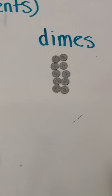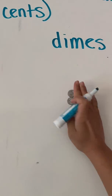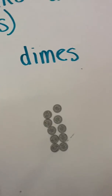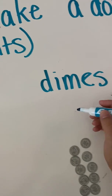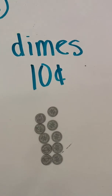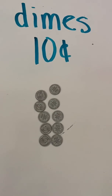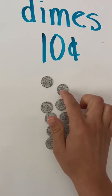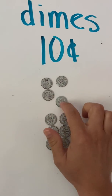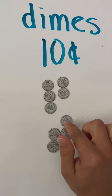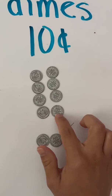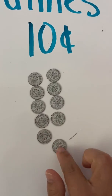Let's do our dimes. Dimes are worth — I hope you said it — 10 cents. So that means we count by 10. 10, 20, 30, 40, 50, 60, 70, 80, 90, 100.